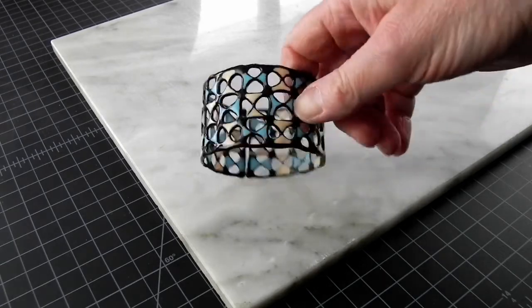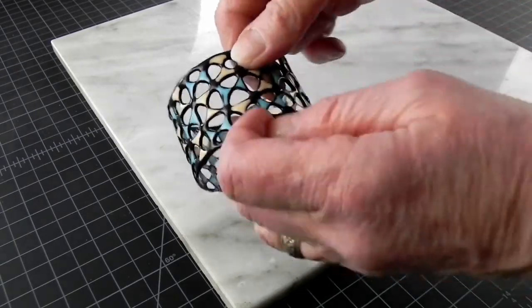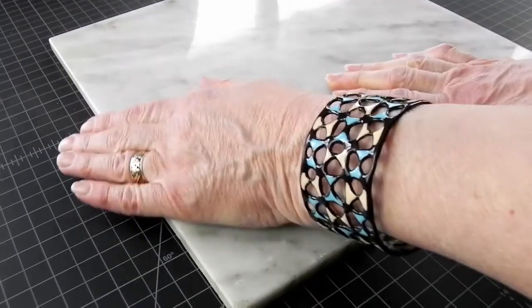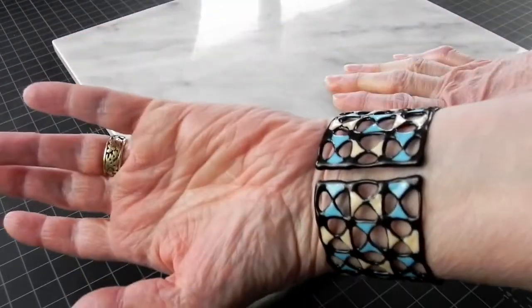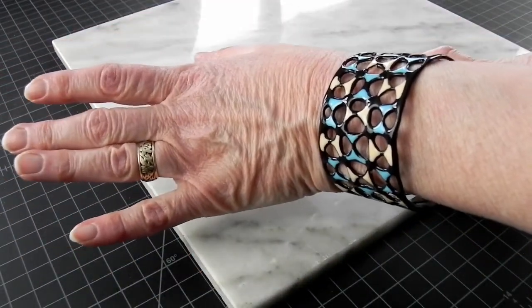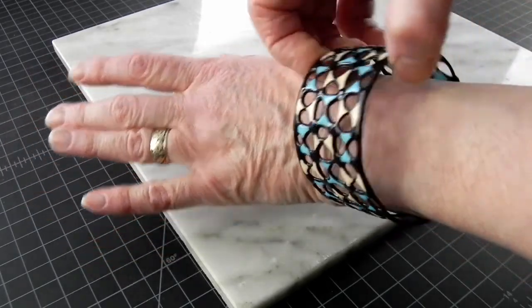The good news is that you can bake flat parts and shape them later. There are several methods of shaping flat parts later, other than hot water forming, but that will have to be another video. Until then, go and make something!